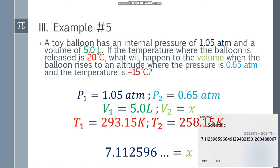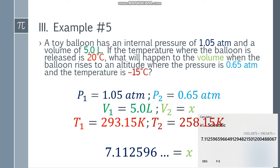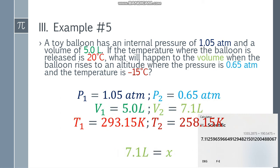Now let's check sig figs: 1.05 has 3, 5.0 has 2, 0.65 has 2, 293.15 has 5, and 258.15 has 5. So 2 sig figs. Count 1, 2 — cut. Since this digit is 1, we round it down. The final answer is 7.1 liters.